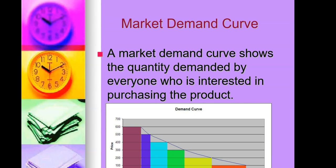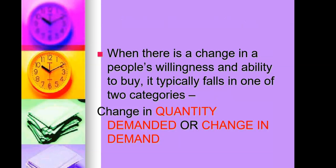A market demand curve shows the quantity demanded by everyone who is interested in purchasing the product. It's basically everything we've been talking about, but now you're adding everybody in the market who is purchasing a particular item.